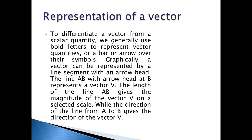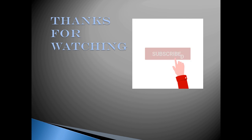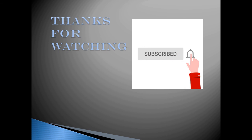Representation of a vector: to differentiate a vector from a scalar quantity, we generally use bold letters to represent vector quantities, or a bar or arrow over their symbol. Graphically, a vector can be represented by a line segment with an arrow head. The line AB with an arrow head at B represents a vector V. The length of the line AB gives the magnitude of vector V at the selected scale, while the direction of the line from A to B gives the direction of V. That's all for today's lecture. Thanks for watching.